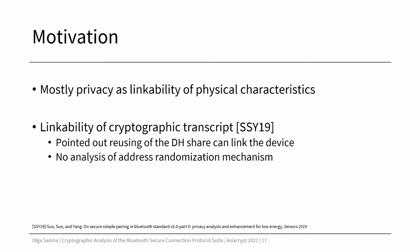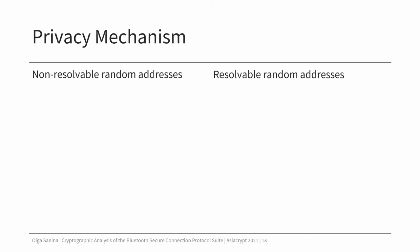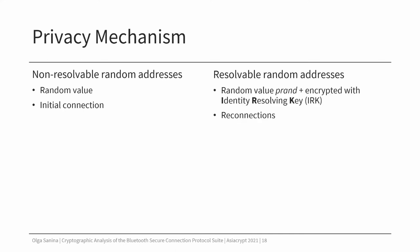However, they only focused on secure connections and did not give any analysis of the address randomization mechanism, which is essential for the key exchange and done before the devices enter the secure connection stage. The privacy mechanism in Bluetooth allows the devices to use non-resolvable or resolvable random addresses instead of their physical MAC addresses. Non-resolvable addresses are just random values that are regenerated every certain period of time. They do not contain any information about the device, and that is why they can be used only in initial connections.